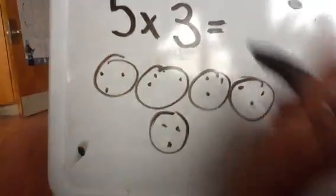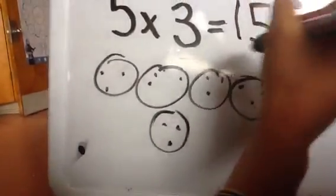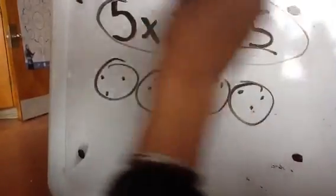That's the answer for 5 times 3 equals 15. That's how you solve 5 times 3. Bye!